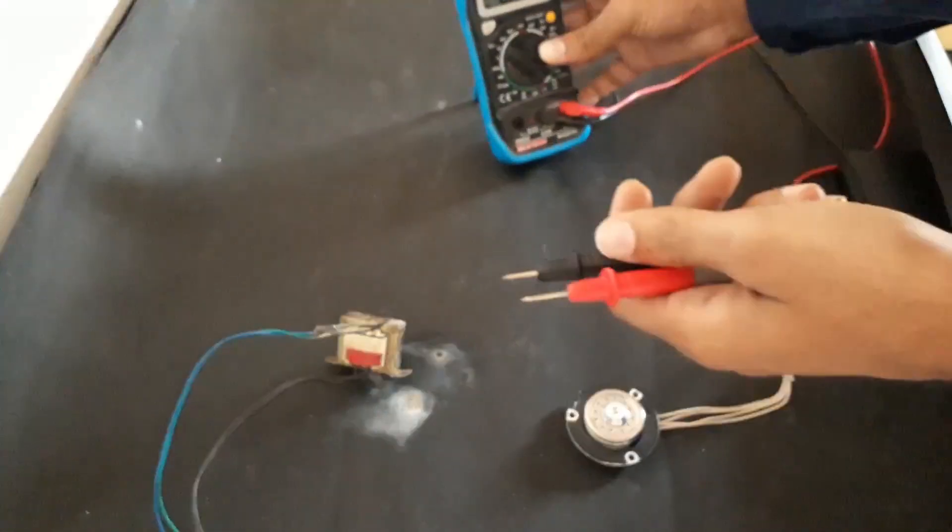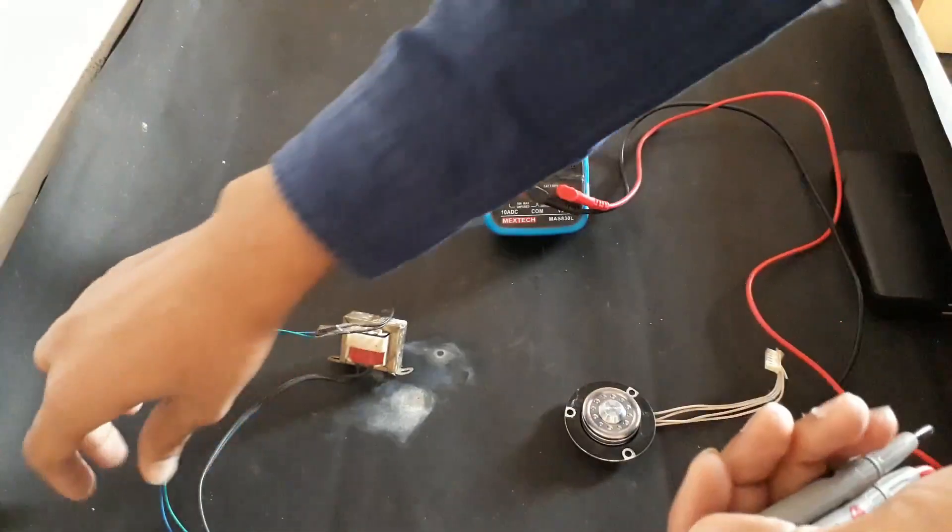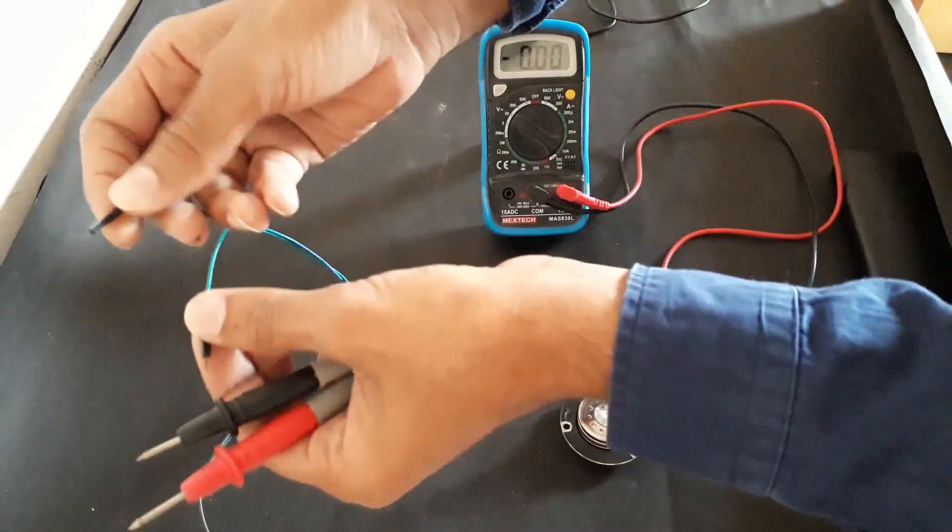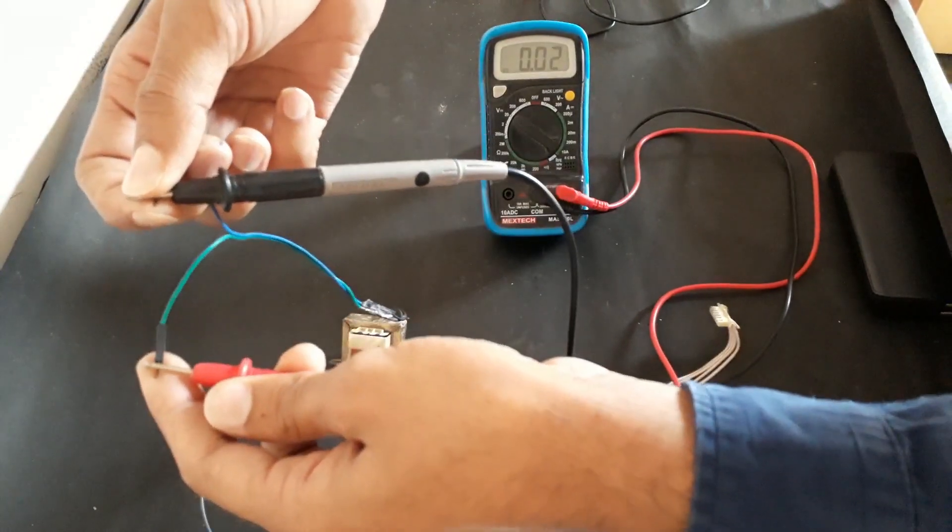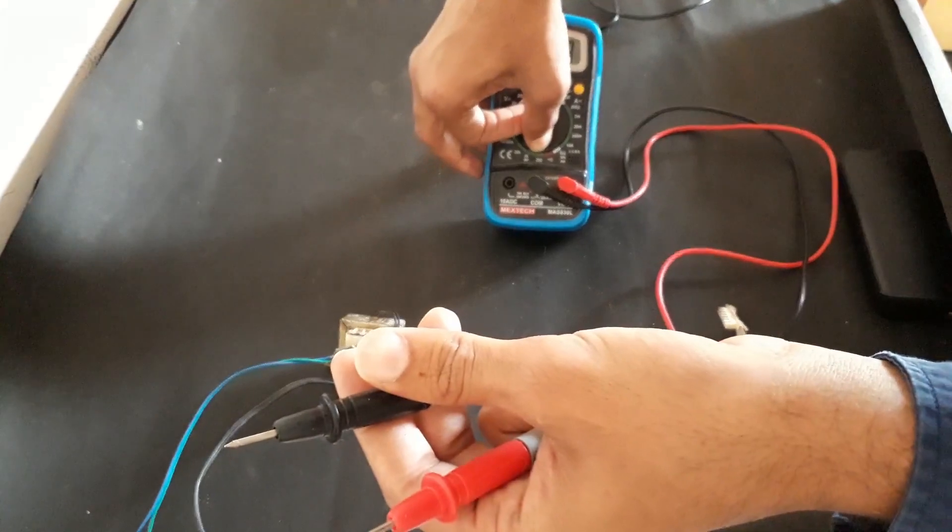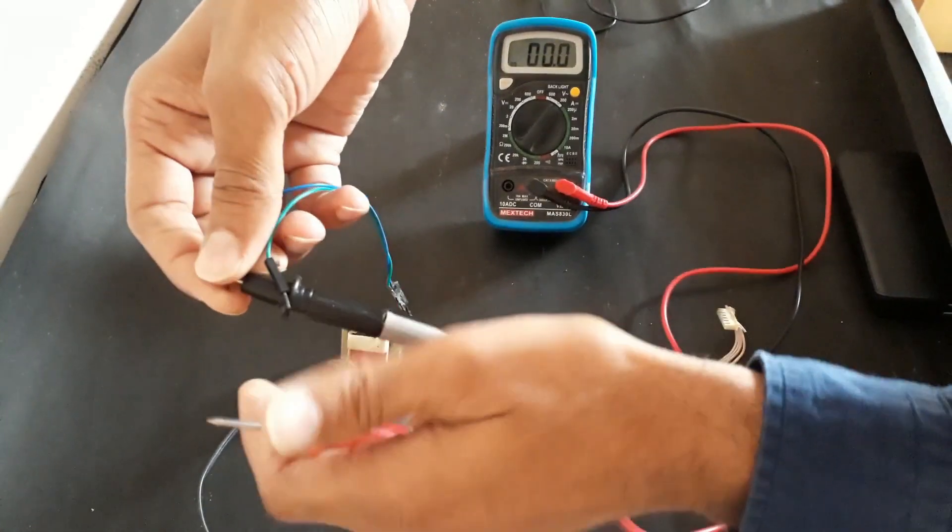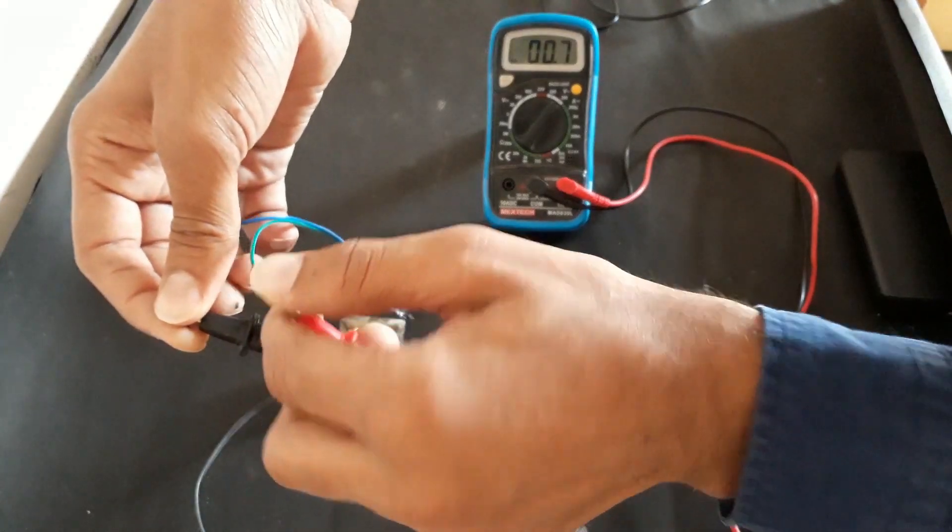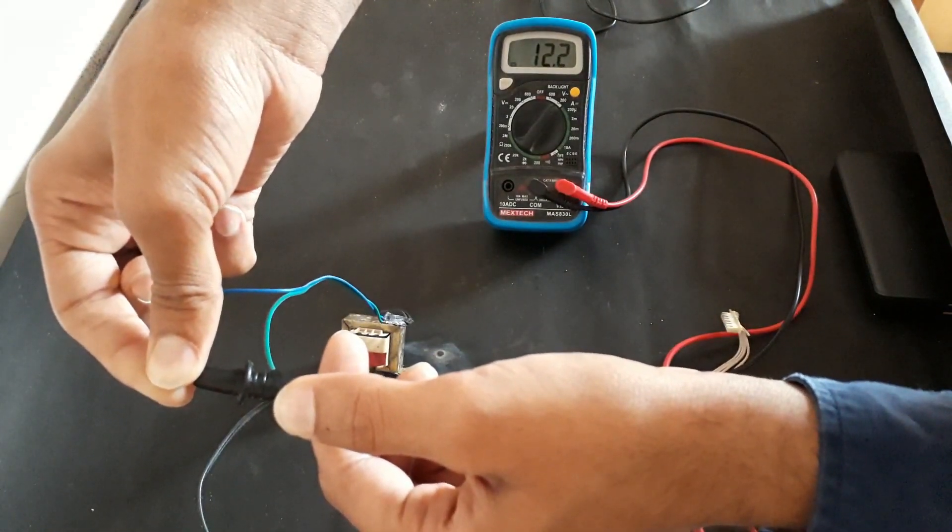Here I have another transformer of the same rating. Now we will see the output of this transformer. We need to put it in the AC. Well, it's around 12 volts.